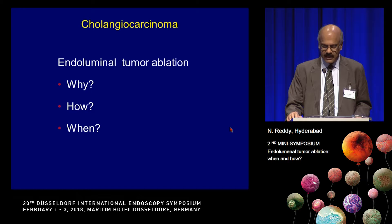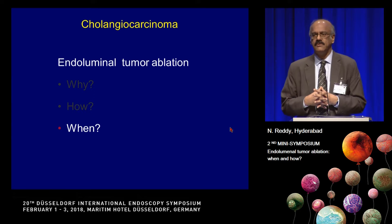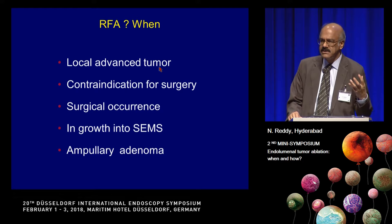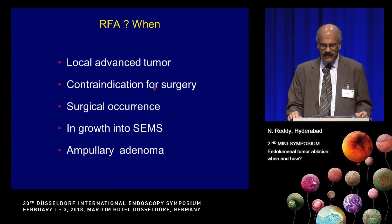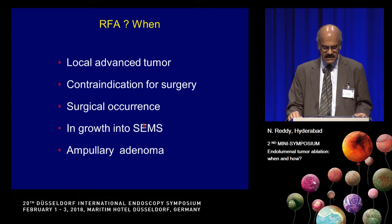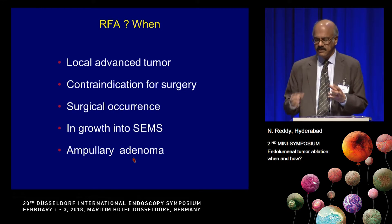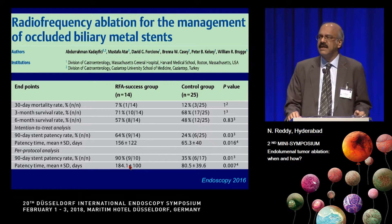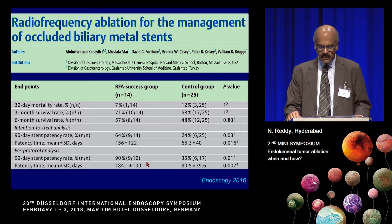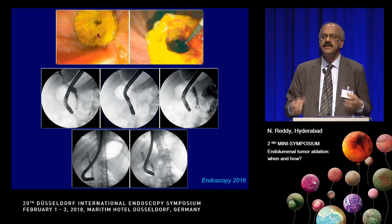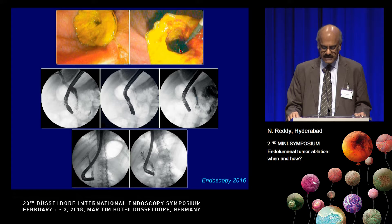When should we use RFA? We use it in cholangiocarcinoma when there is a locally advanced tumor that is not surgically amenable, when comorbid conditions contraindicate surgery, when there is surgical recurrence, when there is tumor ingrowth into stents, and when there is an ampullary adenoma with high-grade dysplasia extending into the bile duct. For occluded metal stents with tumor ingrowth, a study from Turkey showed clearly that RFA can increase stent patency — classic pictures demonstrate tumor infiltrating the stent, which RFA can clear completely.